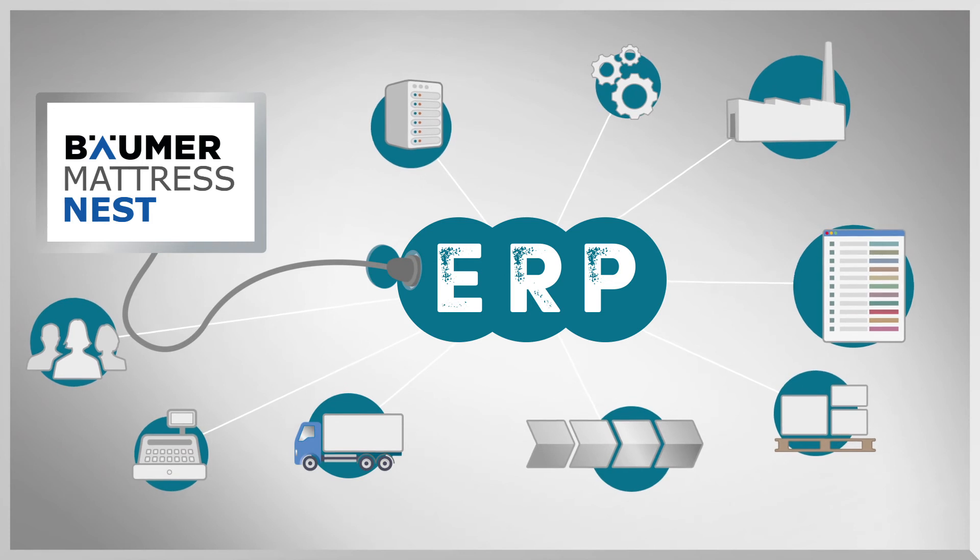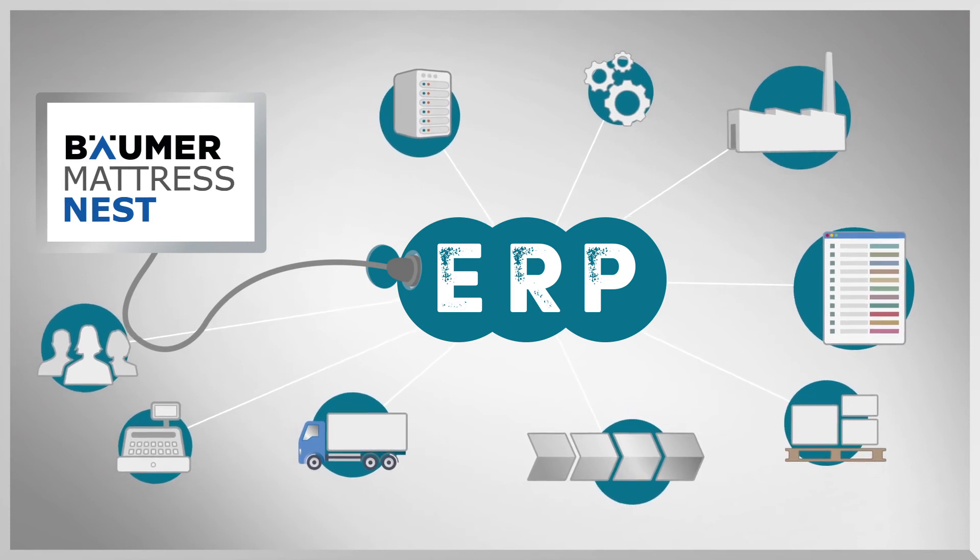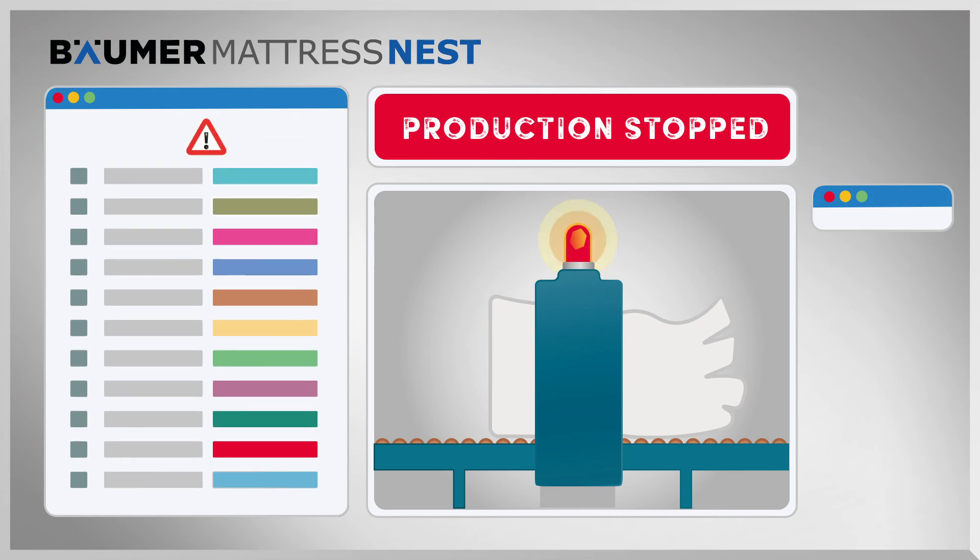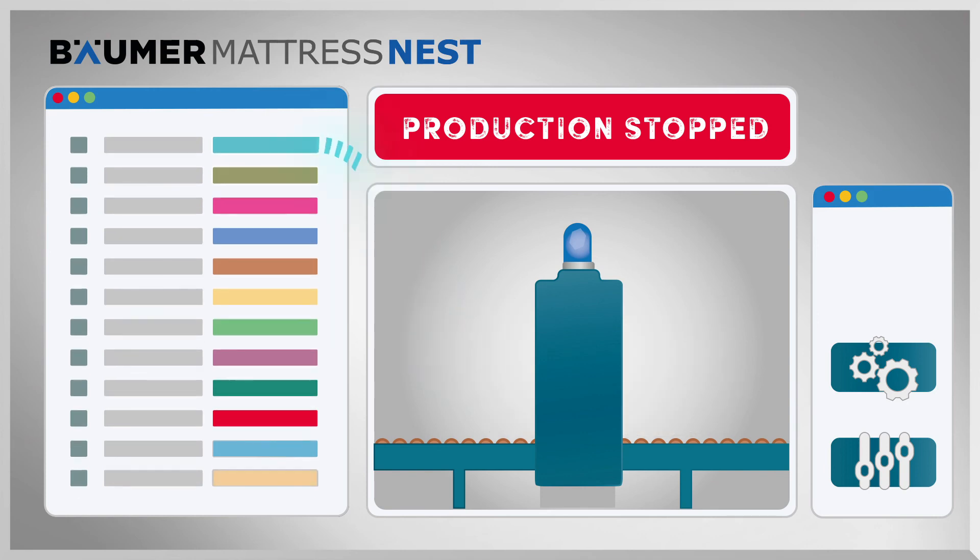And once a batch has been nested automatically, you can even optimize it manually. If you run into a problem like a broken blade or quality issues, simply move the needed parts back to the production list for the next batch.